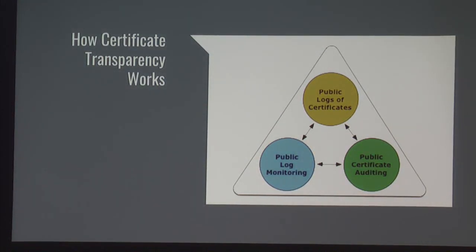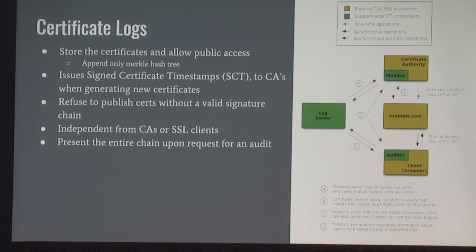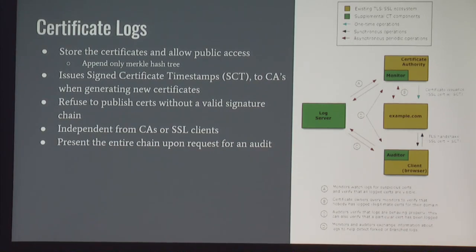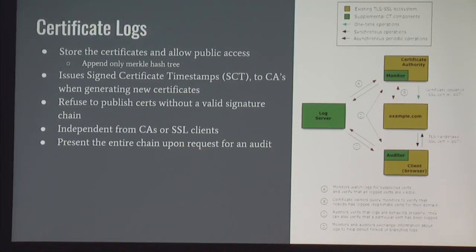There are three different components: the public logs, the auditors, and the monitors. All three work together to audit each other and make sure no one misbehaves. First, the logs are basically stored certificate logs — they are append-only Merkle tree hashes and anyone can audit them. When a CA submits a certificate to a certificate transparency log, they receive back an SCT, or Signed Certificate Timestamp. When the browser receives that in the certificate, it allows them to verify that the certificate is actually in that log. Logs should also refuse to publish certificates that don't have a valid certificate chain, and it's important that the logs are independent from certificate authorities or SSL clients to avoid collusion.